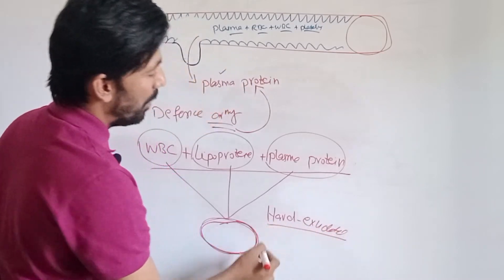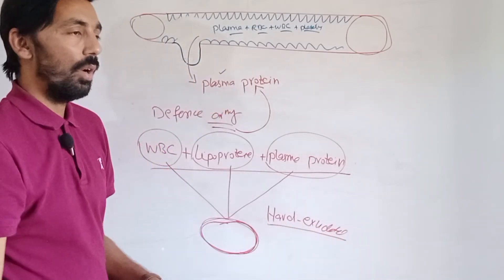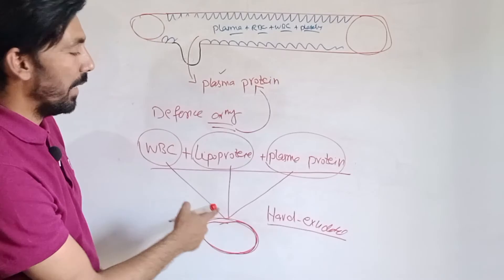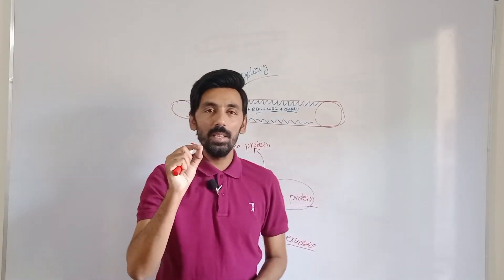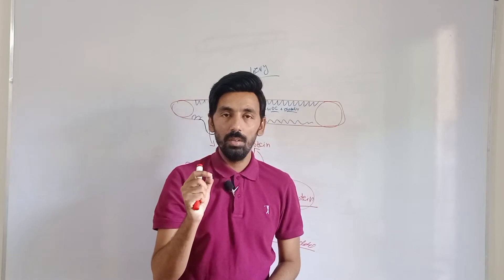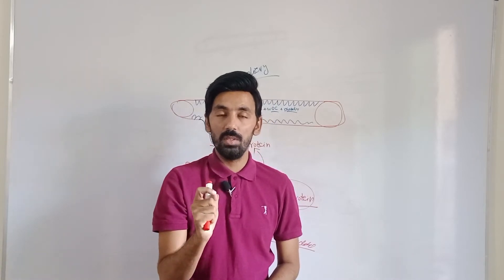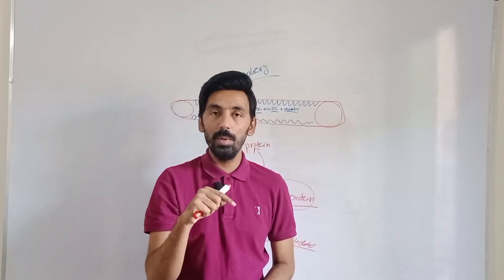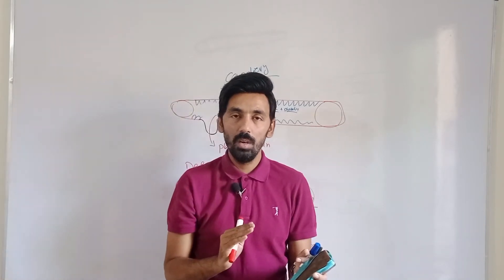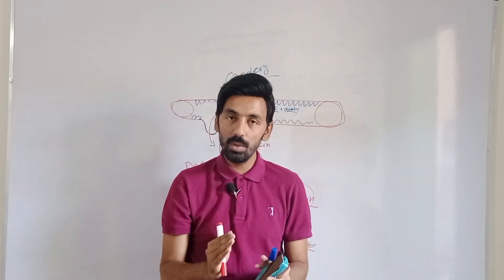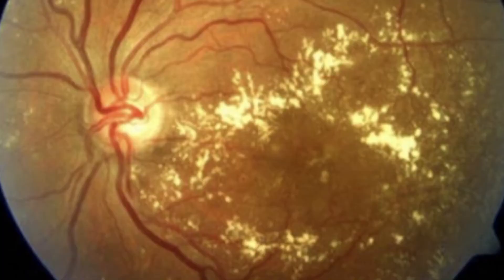That deposition of the dead bodies of white blood cells, lipoprotein, and plasma proteins at the retinal tissue is called hard exudates. Hard exudates are smaller in size, yellowish in color, and most importantly they have distinct margins. These characteristics differentiate hard exudates from soft exudates.